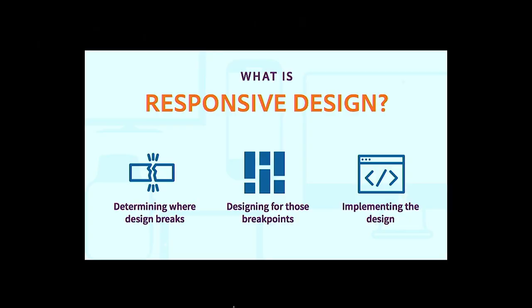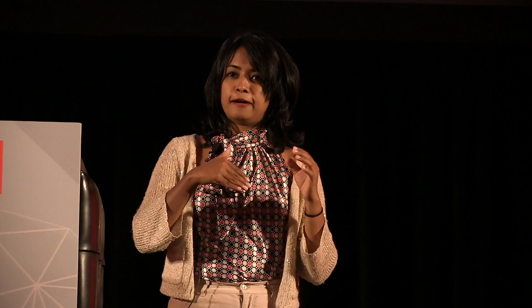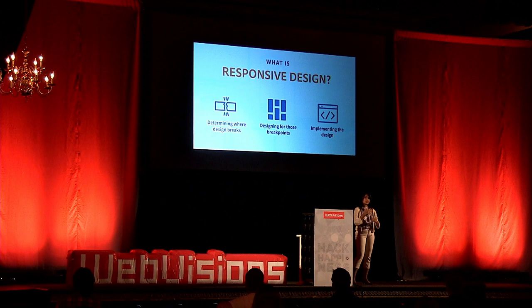Going back to the responsive design process — I want to break it down into slightly different ways of thinking about it. Responsive design begins when you know where your design breaks. This is weird to say before you start designing, but once you know where your design breaks, it's easy to use your favorite design tool to design for those breakpoints and then implement. When you determine where the design breaks first, design and development can happen in tandem, making it faster and more iterative to create the end result.